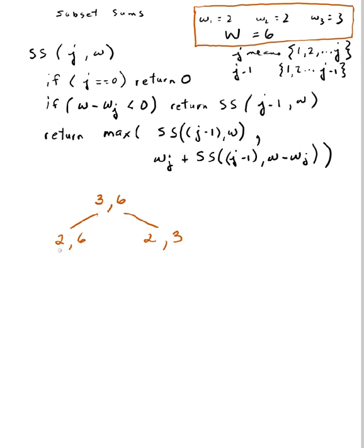Okay, let's continue right here where I'm trying to find the optimum solution for items 1 and 2 where I have 6 units of weight to work with. J is not equal to 0.